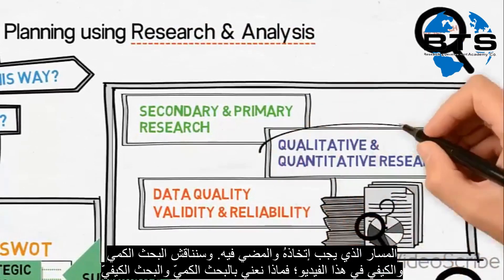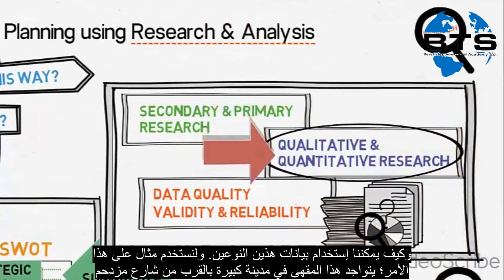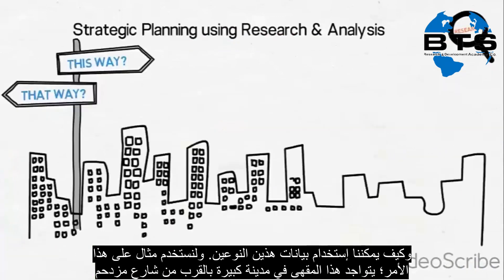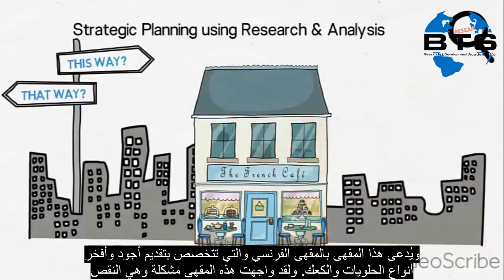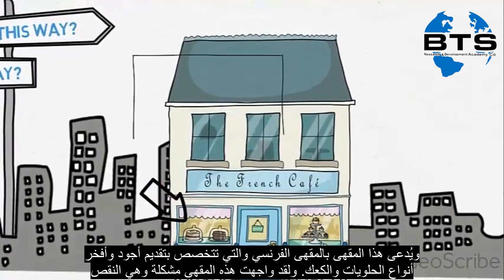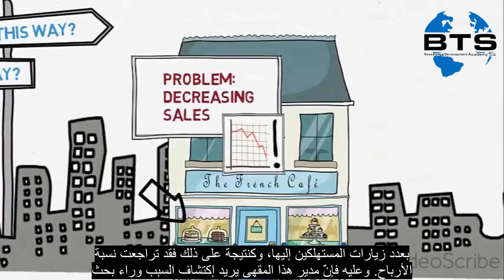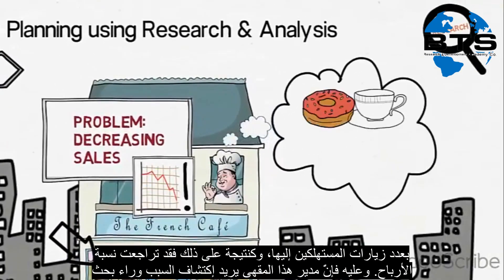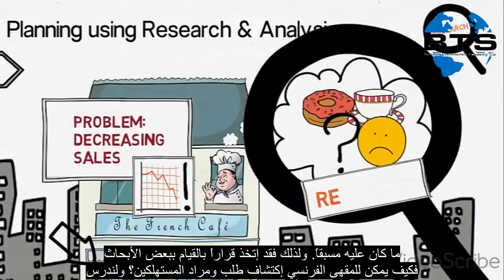Qualitative and quantitative research is what we will address with this video. Let us use an example. This café is located in a large city close to a busy high street. It's called the French café, and it specializes in serving high-quality cakes and desserts. The French café is troubled by the fact that fewer and fewer customers visit the café, and sales are decreasing as a result. The owner would like to find out why customers are looking elsewhere for their cakes and coffee, to help him make decisions about what to do to turn things around. Therefore, he has decided to do some research.